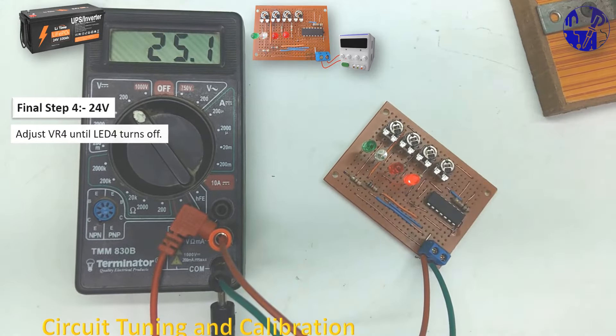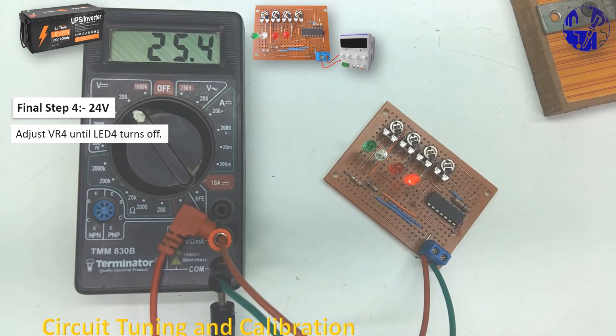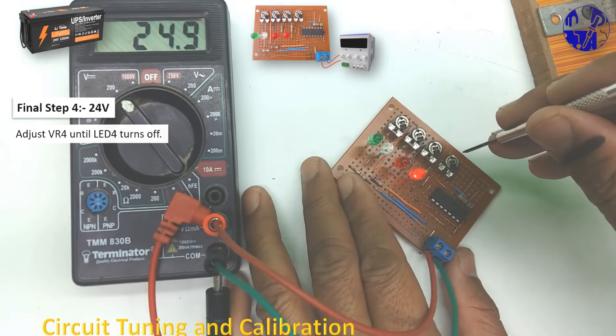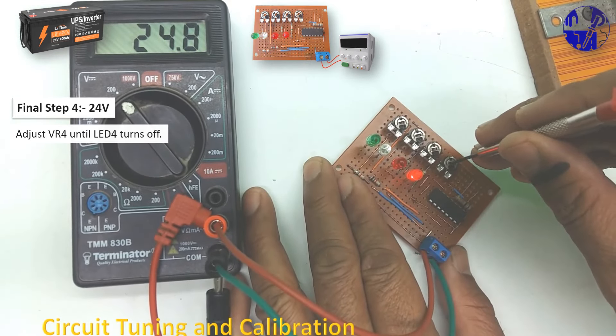In the final calibration step, set the voltage to 24 volts. When the battery voltage drops below 24 volts, LED four will turn off.